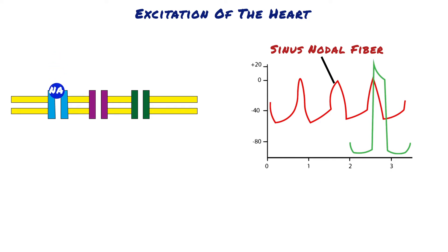As sodium ions enter the cells of the SA node, the membranes are depolarised and gradually the membrane potential reaches the voltage range of a calcium channel for transient calcium current. This channel opens at about negative 50 millivolts. As calcium enters the cell, the membranes depolarise further until the long-lasting calcium channel opens at negative 40 millivolts. In the SA node, the final depolarisation and propagation of the action potential comes from calcium channels.